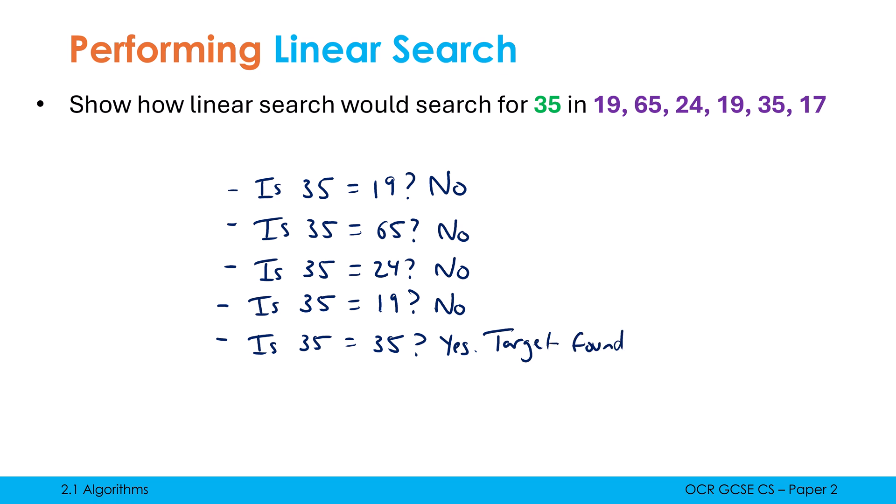And if it was a variant of linear search where we were looking for an actual position, if this was an array, for example, our index numbers would be this. And maybe it would also tell us, I found it at index four. But not all search algorithms will even do that. Some will just tell you either yes or no.